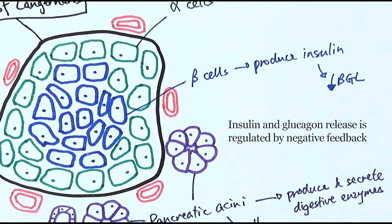Alpha cells and beta cells can both regulate the amount of glucagon and insulin they produce by negative feedback. They are the actual cells that detect our blood glucose level and decide how much glucagon and how much insulin they are going to produce and secrete into the bloodstream in response to fluctuations in glucose level. In a specific case, insulin produced by beta cells can stop alpha cells from producing more glucagon in the case of a high blood glucose level.